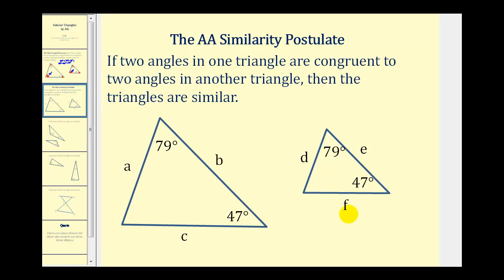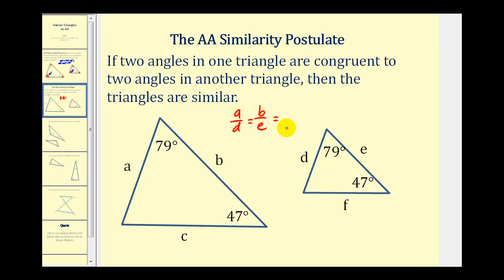Remember, if two triangles are similar, corresponding angles are congruent and corresponding sides are proportional. So just to review, the ratio of A to D would have to equal the ratio of B to E, which would have to equal the ratio of C to F.